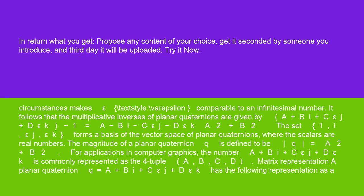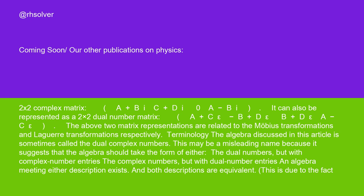Matrix representation: A planar quaternion Q equals A plus Bi plus C epsilon J plus D epsilon K has the following representation as a 2 by 2 complex matrix: [[A plus Bi, C plus Di], [0, A minus Bi]].